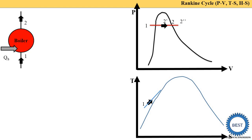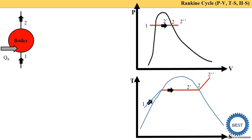Water is not directly converted into steam all at once. Initially, a small percentage converts to steam, then 10%, 20%, 50%, until it's completely converted to steam. If more heat is supplied, it becomes superheated steam. On the TS diagram, point two (wet) is in the wet region, two-dash (dry and saturated) is on the saturation curve, and two-double-dash (superheated) is beyond it.